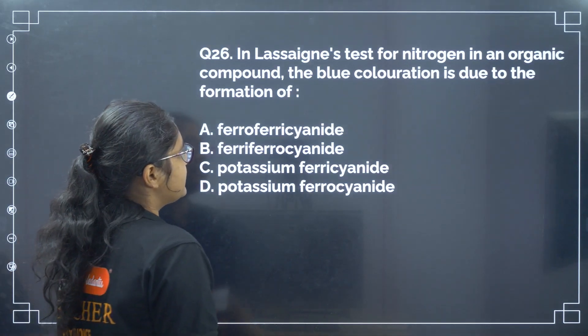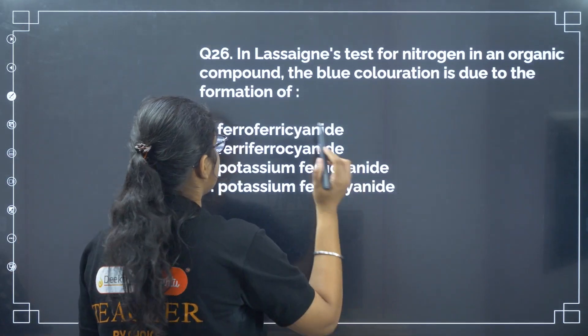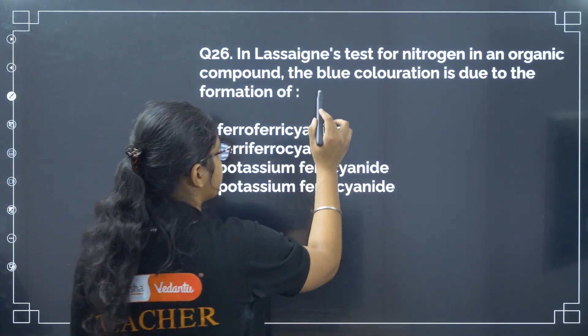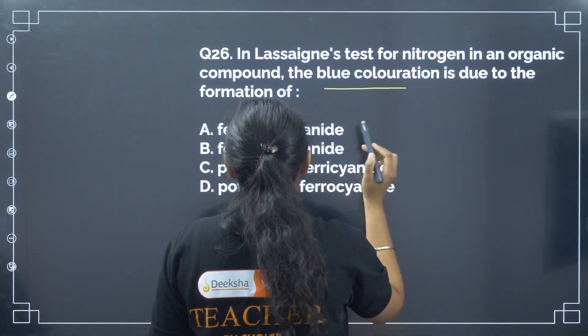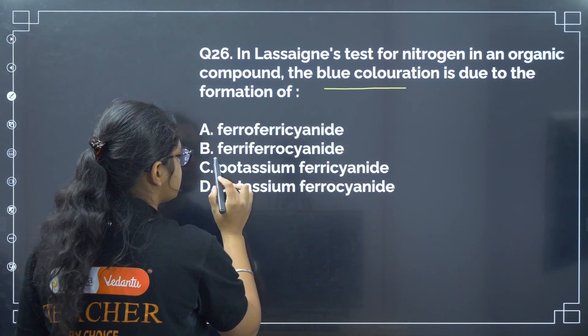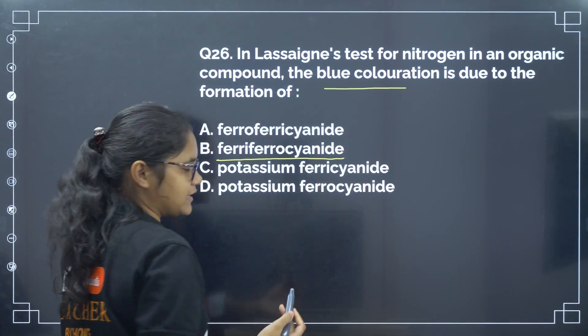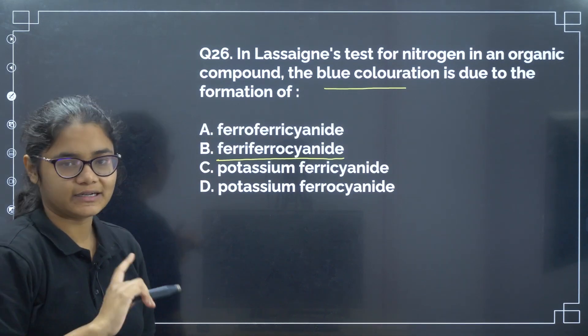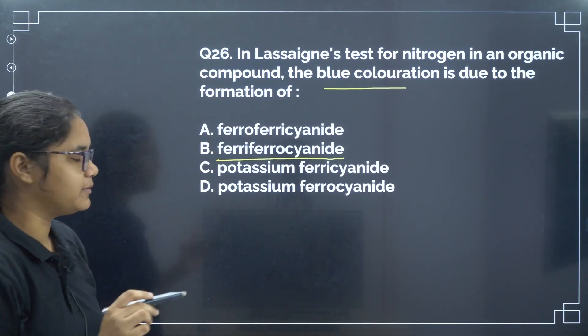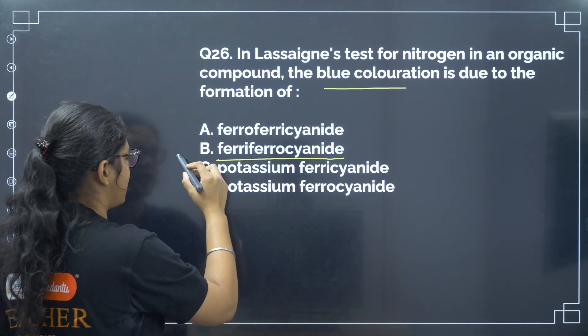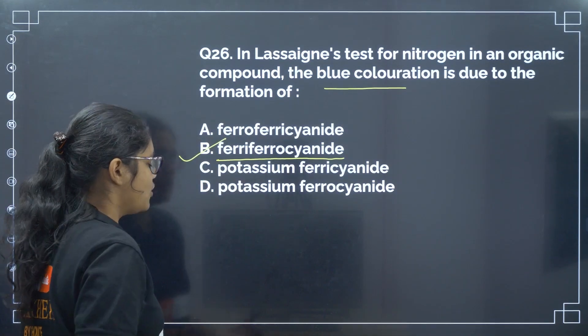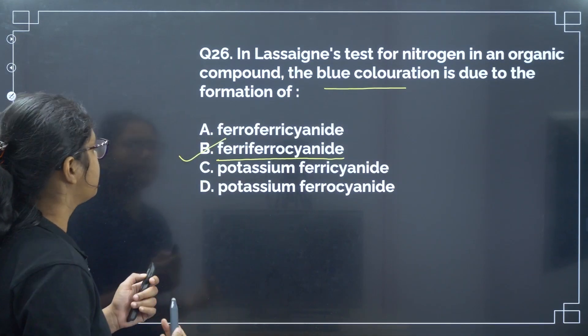Next: in Lassaigne test for nitrogen in an organic compound, the blue coloration is due to the formation of ferrocyanide. Remember both the structure and the name. Correct answer is option number B.